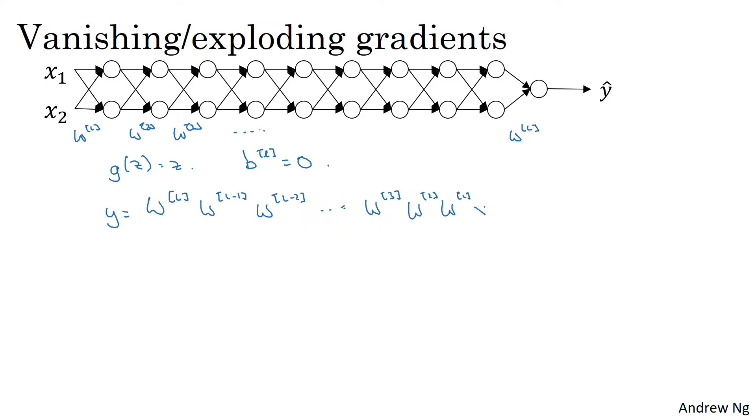But if you want to check my math, W1 times x is going to be z1, right? Because b equals zero. So z1 equals W1 times x, plus b which is zero. But then a1 equals g(z1). Because we use a linear activation function, this is just equal to z1. So this first term, W1x, is equal to a1.